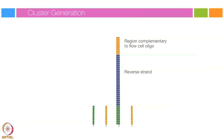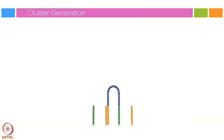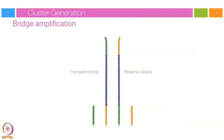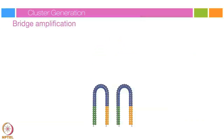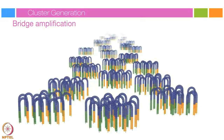A polymerase creates a complement of the hybridized fragment. The double-stranded molecule is denatured and the original template is washed away. The strands are clonally amplified through bridge amplification. In this process, the strand folds over and the adapter region hybridizes to the second type of oligo on the flow cell. Polymerases generate the complementary strand forming a double-stranded bridge, which is denatured, resulting in two single-stranded copies tethered to the flow cell. This process is repeated simultaneously for millions of clusters.